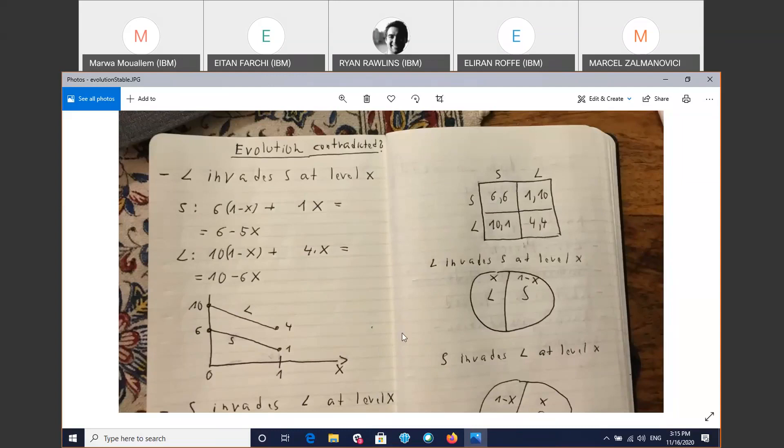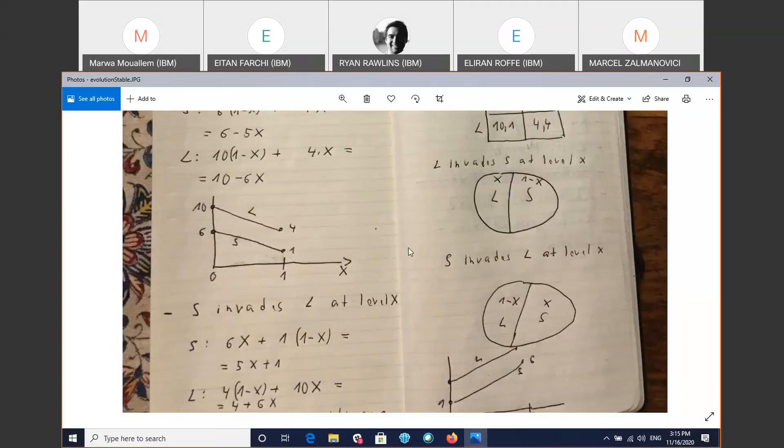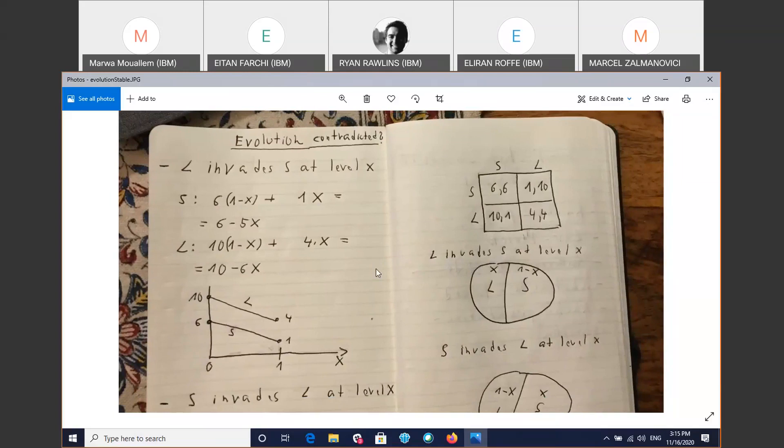Okay, so that's food for thought: how is that possible that we converge to a lower fitness? Is it a contradiction to evolution?